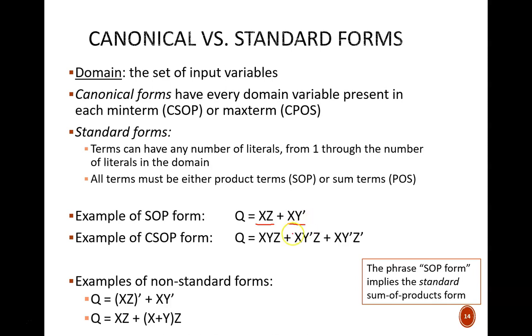This CSOP equation does include every domain variable in each product term, which allows us to call it canonical. There are an unlimited number of ways to write non-standard equations. Here are just two examples. This first example fails to be standard because the first term, XZ quantity prime, is not a true product term. The complement cannot be applied across multiple variables. This final example fails in its second term. X or Y quantity ANDed with Z is neither a product nor a sum term, so this whole equation is in a non-standard form.